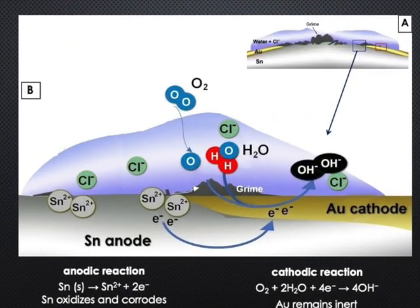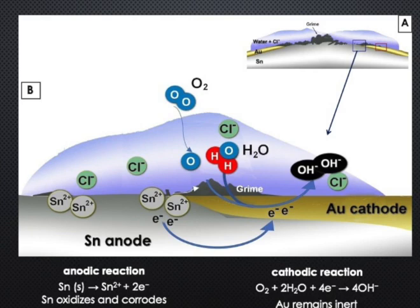Image A is a general view of the corrosion processes in our gilding, and image B shows galvanic corrosion of the tin foil. Here, tin — the less noble metal — is the anode and undergoes oxidation by losing electrons according to the anodic reaction, and thus corrodes. Consequently, electrons move from the tin toward the gold, which is the more noble metal. However, gold does not participate in the cathodic reaction. Gold remains protected, supporting the cathodic reaction, which is oxygen reduction.